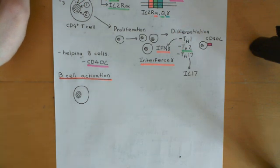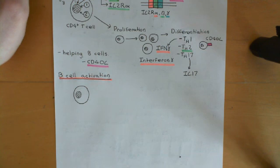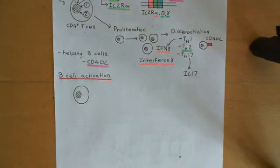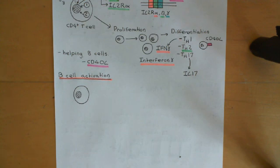Each different B-cell will produce antibody molecules with a different variable region. Antibody molecules can also have different constant regions. There are those different types of constant regions: IgG, IgM, IgA, IgD, and IgE.